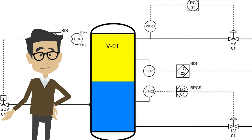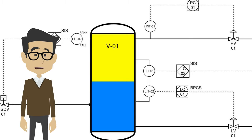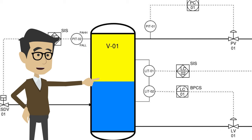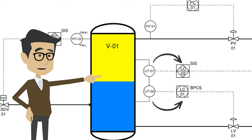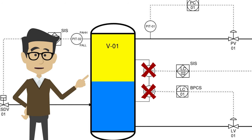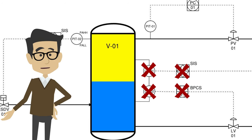To do this effectively, the SIS cannot share any potential common cause failures with the BPCS that would jeopardize its ability to act. An example of this would be using the same level bridle in a vessel for both the BPCS and SIS transmitters. If the bridle is plugged, control of both systems would fail.